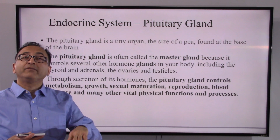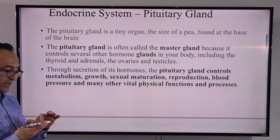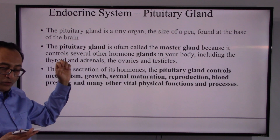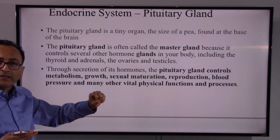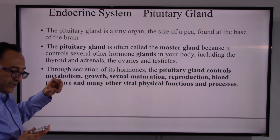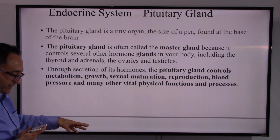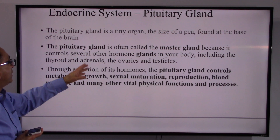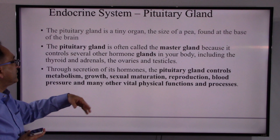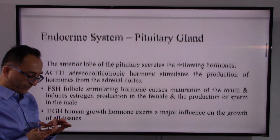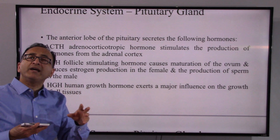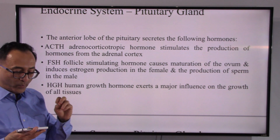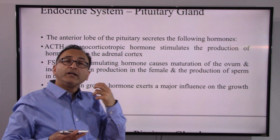The pituitary gland is labeled as the master gland because it dominates — working with the hypothalamus — and it controls the thyroid, parathyroid, adrenal, and the gonads. To summarize, it's a master gland because it controls metabolism, growth, sexual maturation, reproduction, blood pressure, and many other physical functions and processes.